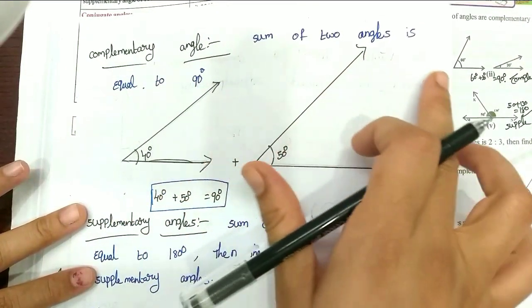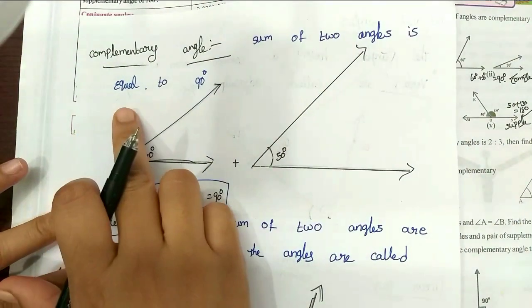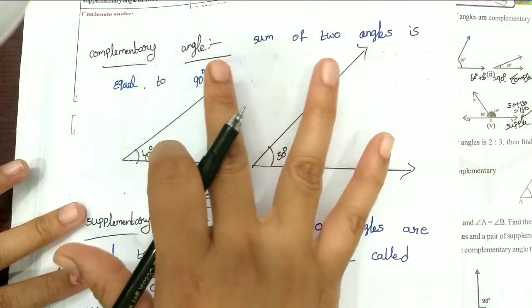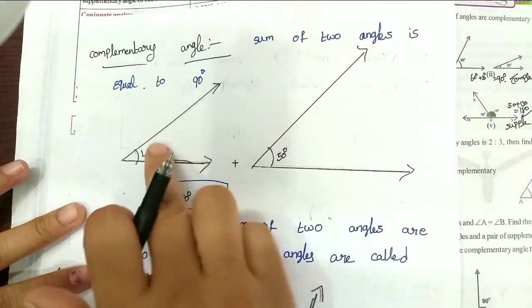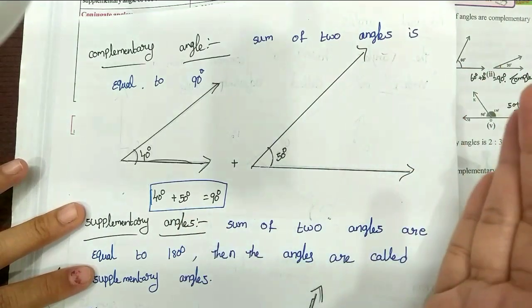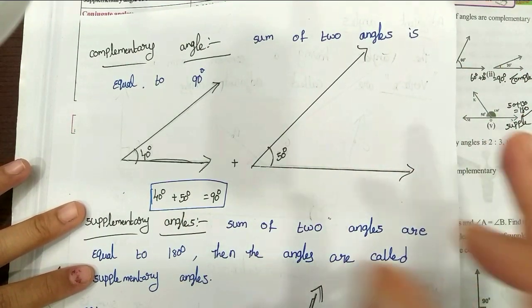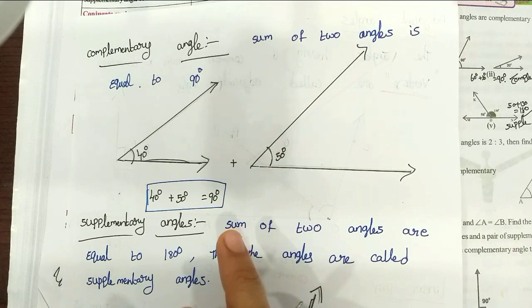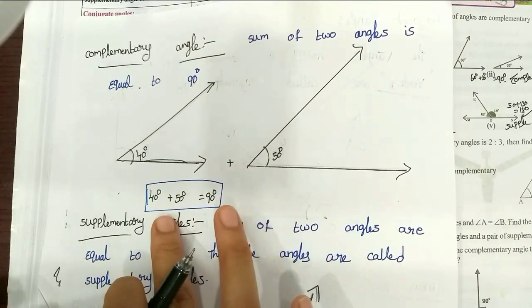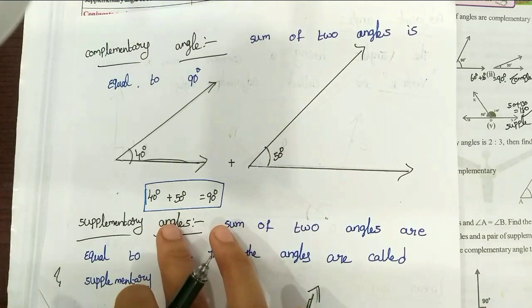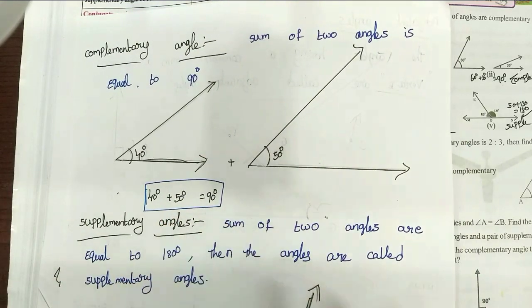Complementary angle: the sum of two angles is equal to 90 degrees. Only two angles — the sum of two angles is equal to 90 degrees.